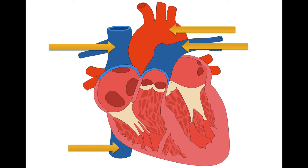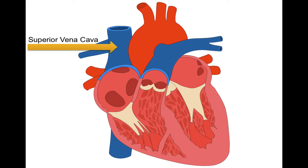So we have the superior vena cava, pictured with the yellow arrow. We're bringing blood back from all the veins above the heart. Blood is taken to the muscles that help you smile, then you use that blood, and the blood returns via veins and ultimately converges on the superior vena cava. Think head, neck — anything above the heart is going to converge on the superior vena cava.